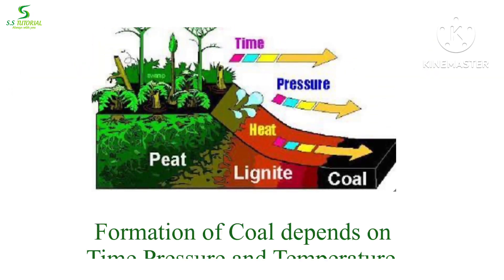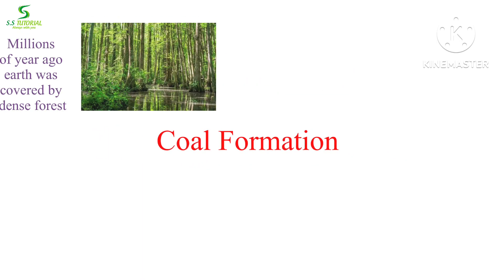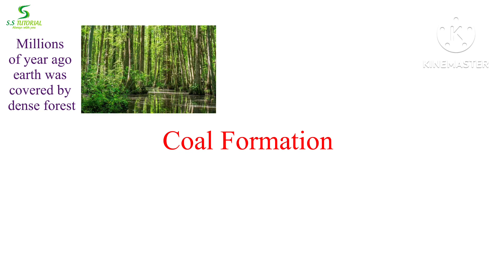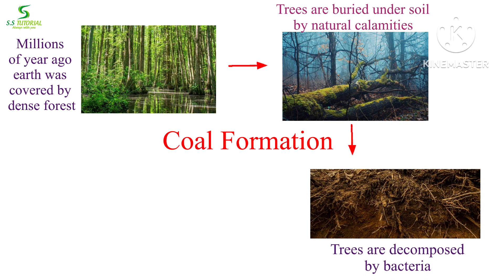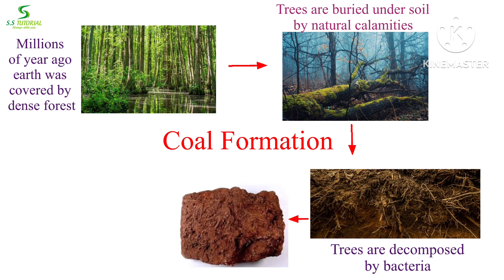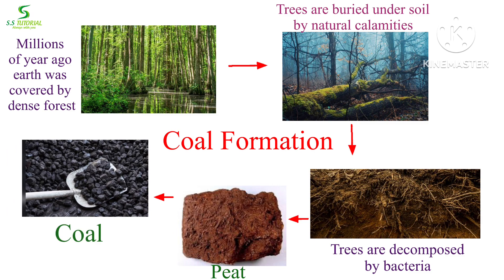The formation of coal depends on time, pressure, and temperature. Millions of years ago there were dense forests and wetlands on Earth. Due to natural calamities like floods and earthquakes, these dense forests and wetlands were buried under the soil. Then bacteria started to decompose these plants as they were no longer in contact with air, and after some chemical reactions these dead plants were first converted into peat.